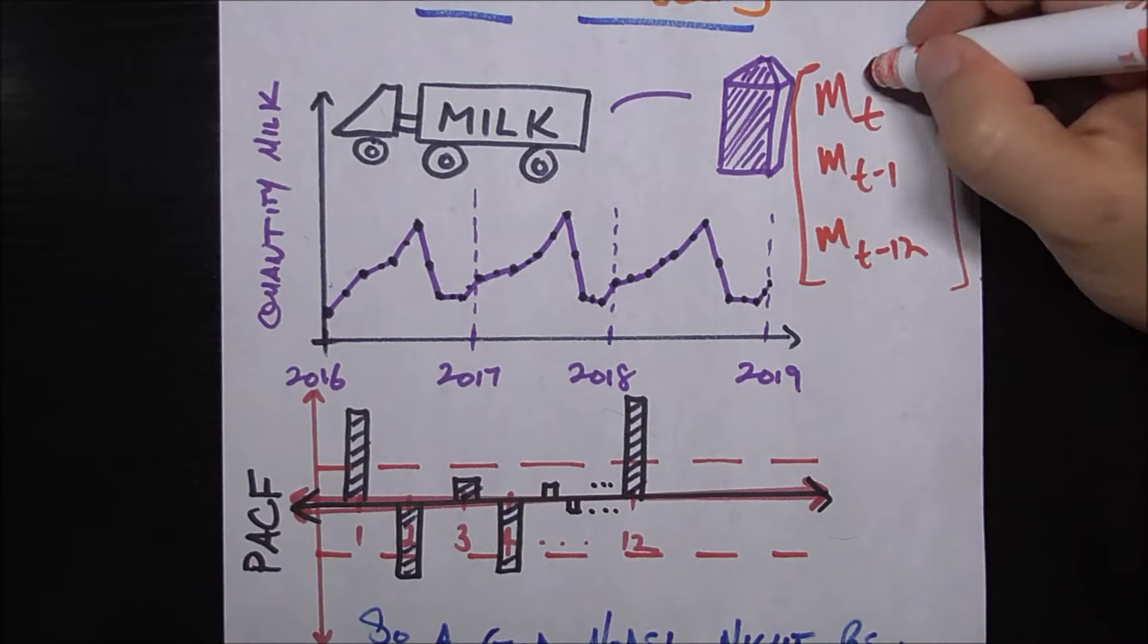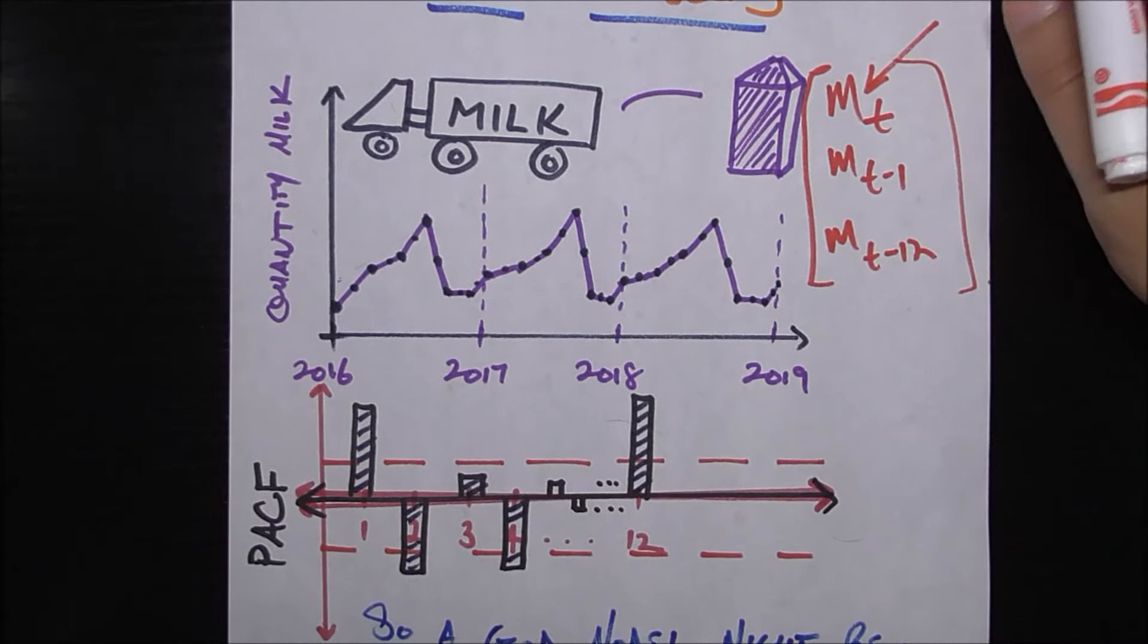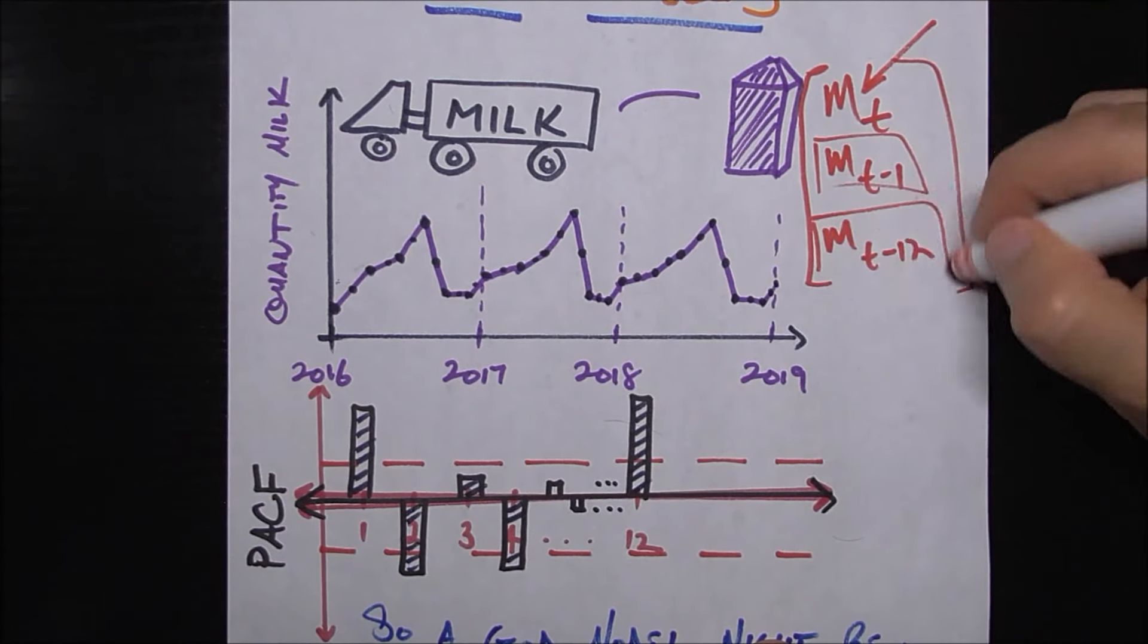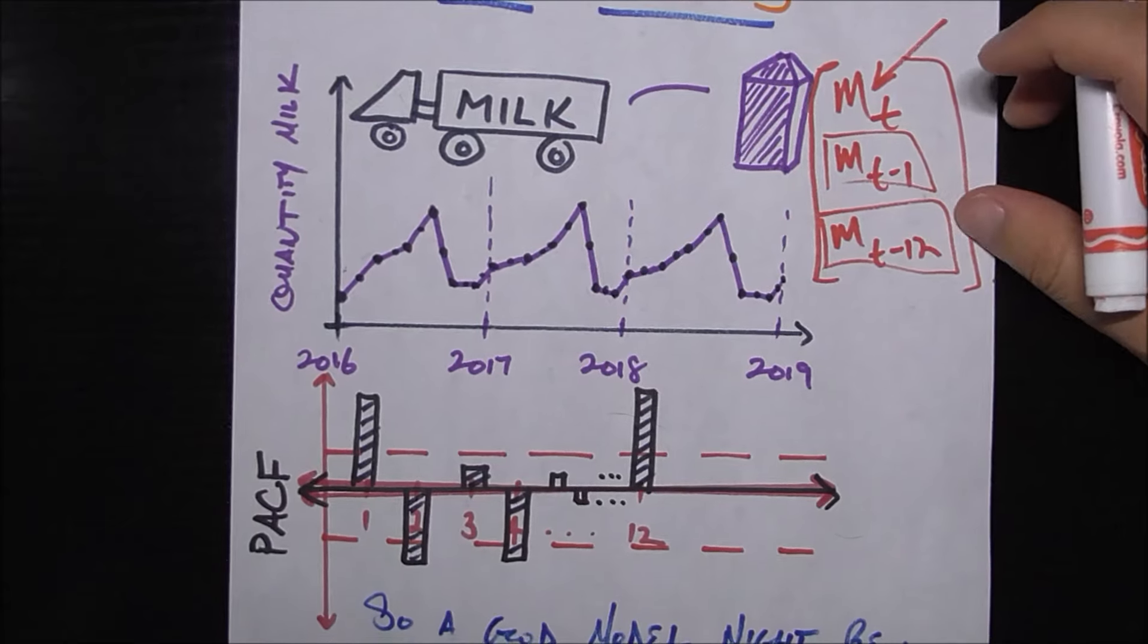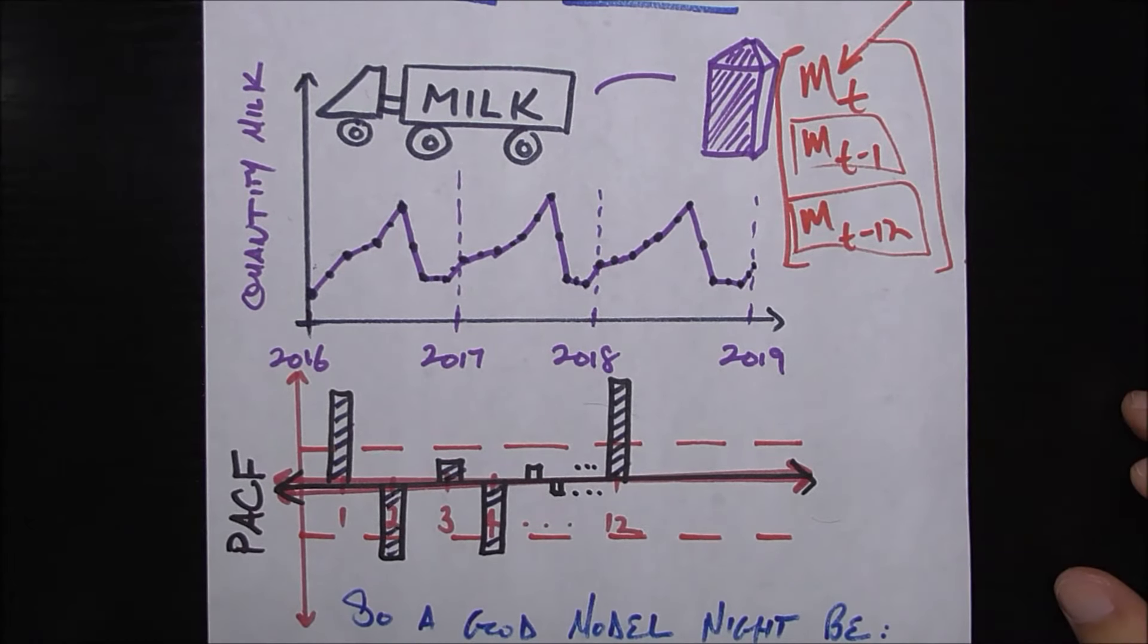So this is our notation for quantity of milk demanded. Of course the thing I'm trying to predict is m sub t because I'm in my current time period. The thing I have available to predict with are all these m sub t minus 1, minus 2, minus 12, however much I want, however much data I actually have.